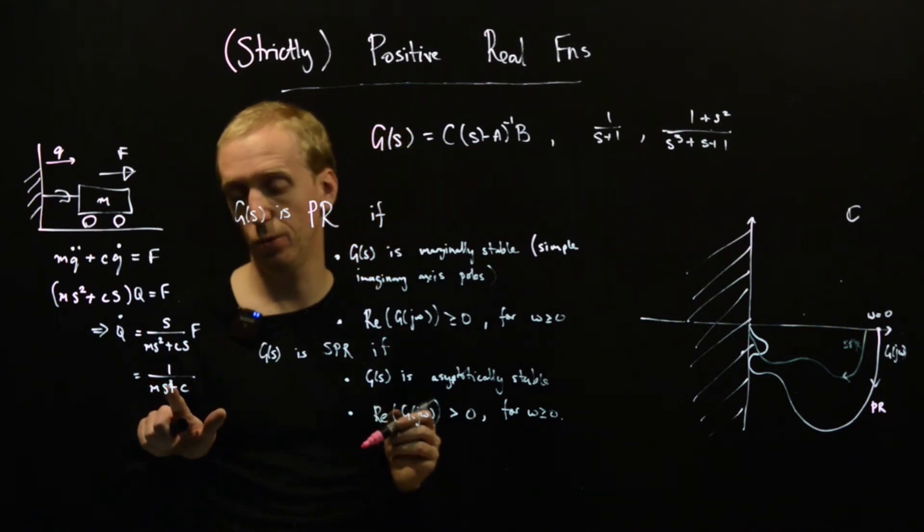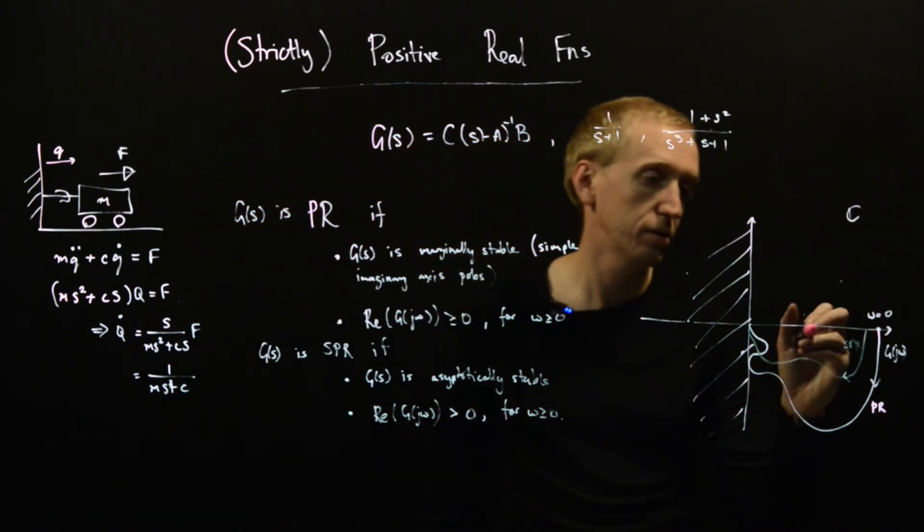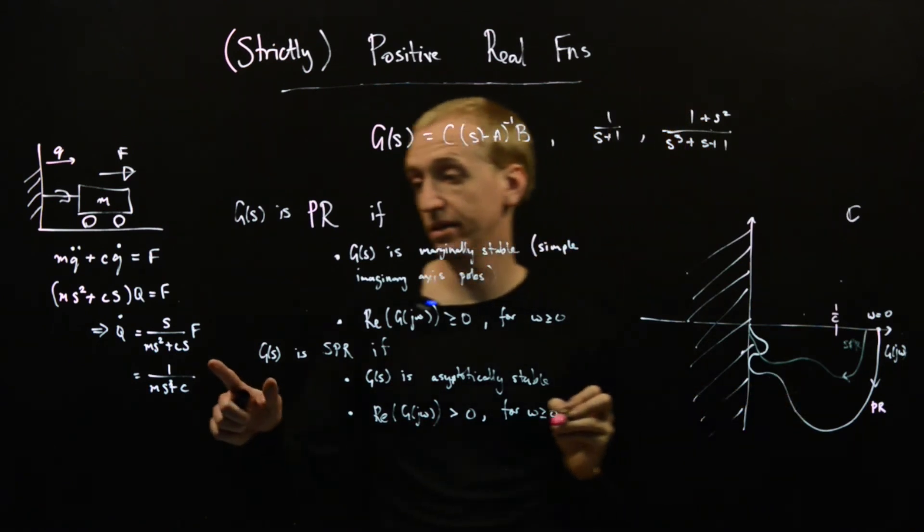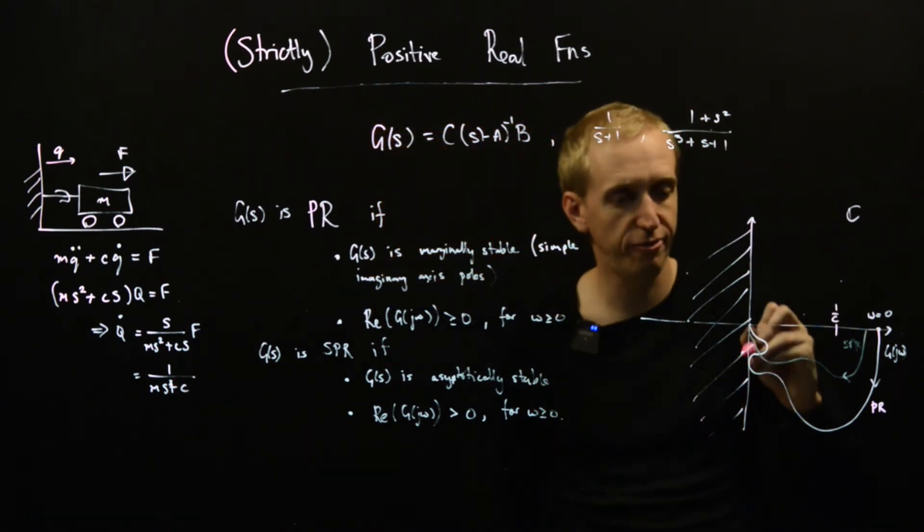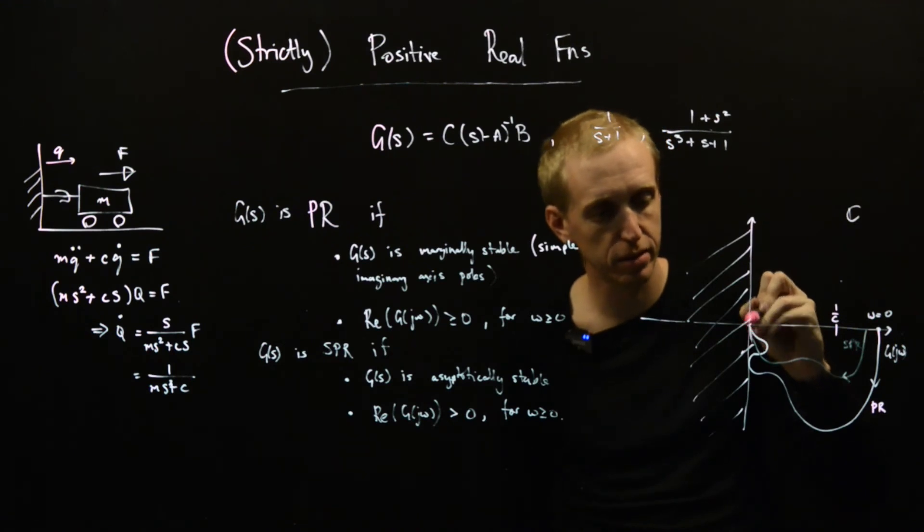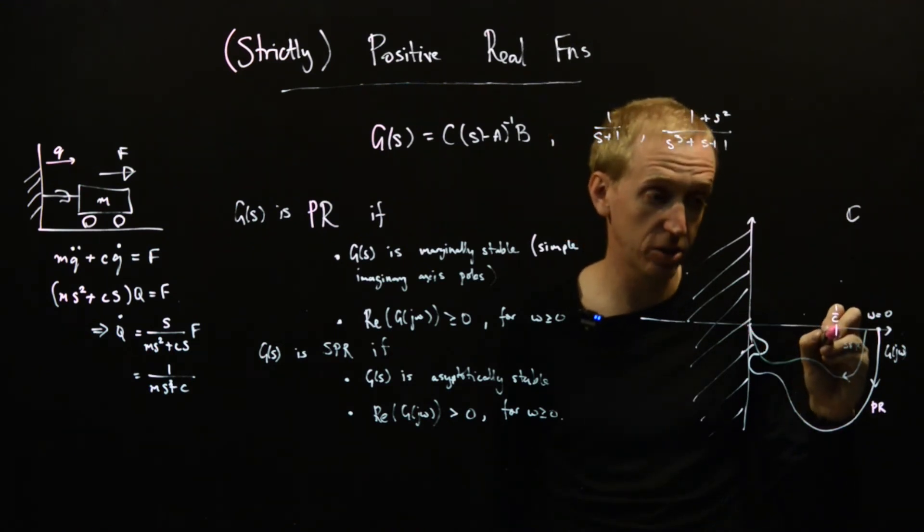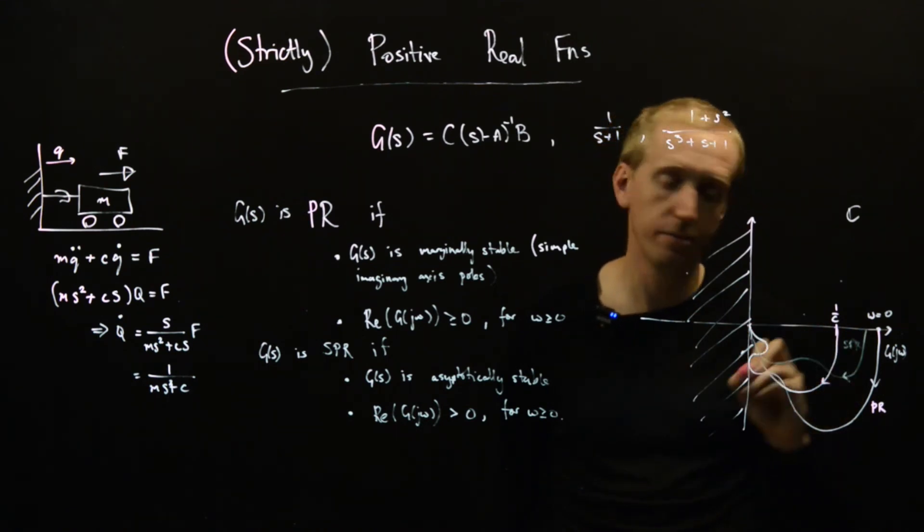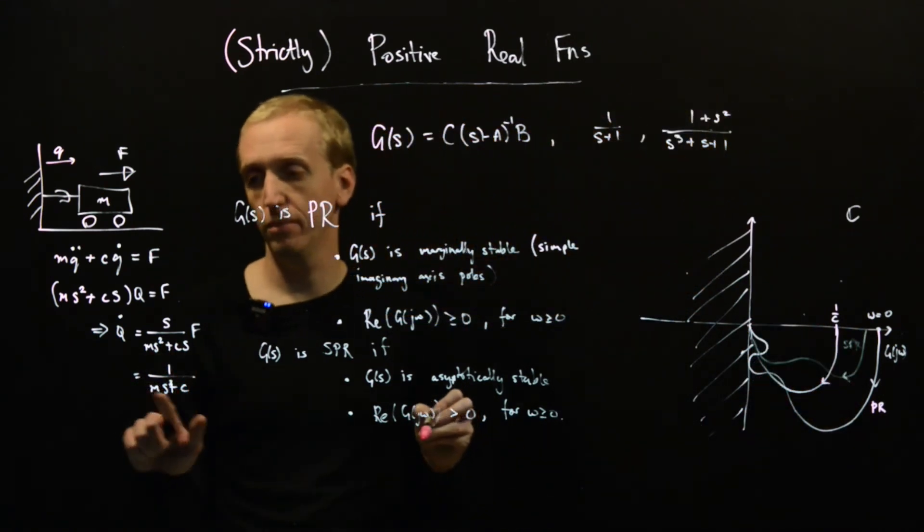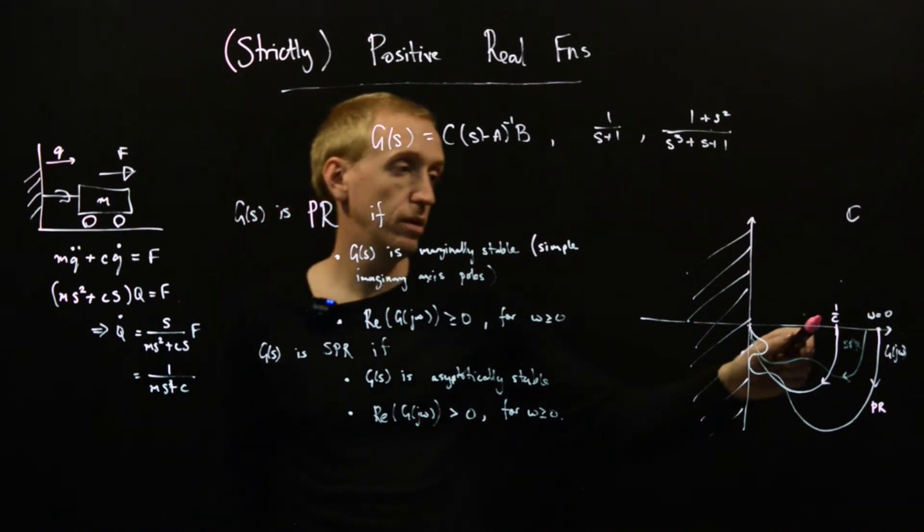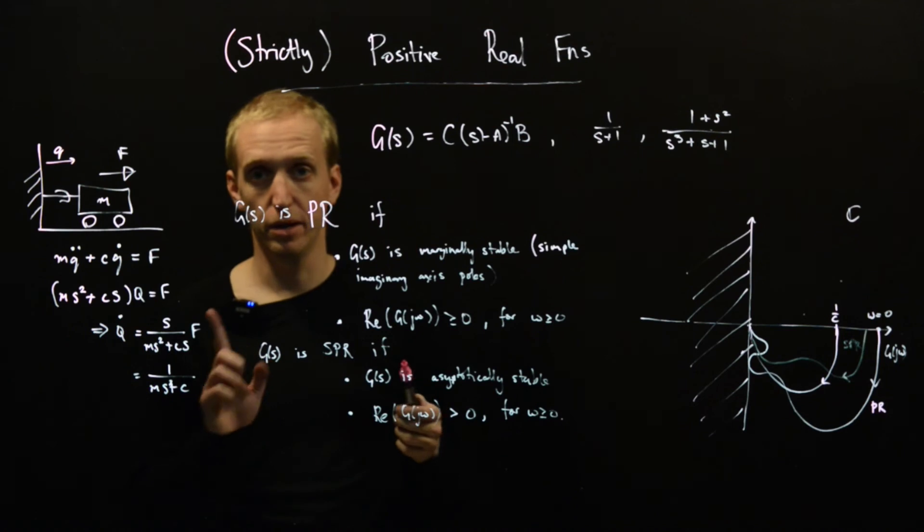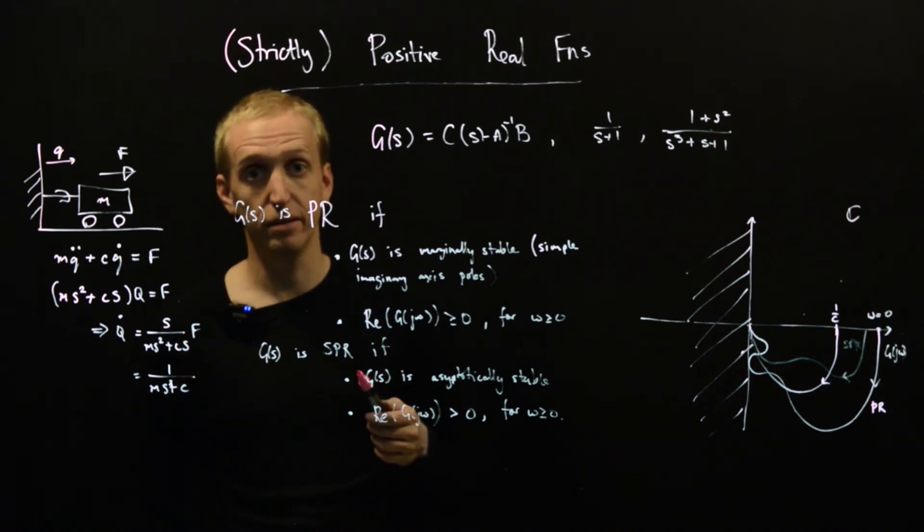So what does the Nyquist diagram of this thing look like? Well, when s is equal to zero, it's one over c. So we have one over c. And then as s goes to infinity, we have phase that comes in at minus 90. And actually, it's just a perfect semicircle here. So the Nyquist diagram of this system is a semicircle.